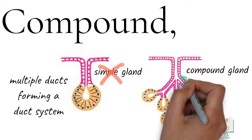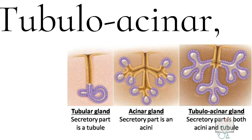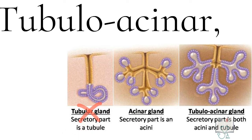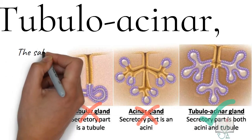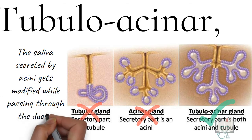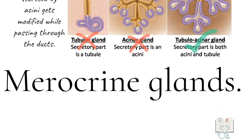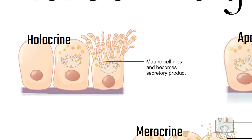Salivary glands are not tubular glands as the secretory part is not a tubule but an acinus. However, they are still not purely acinar glands but tubular acinar glands, as the saliva secreted by the acinus gets modified while passing through the ducts.